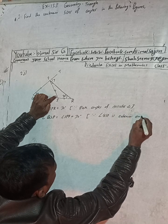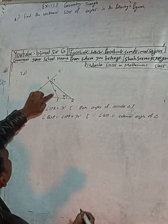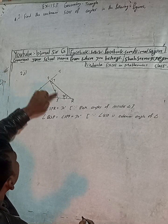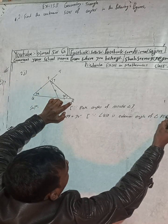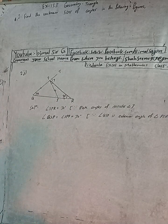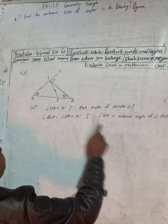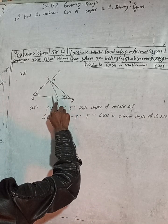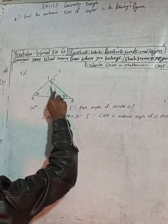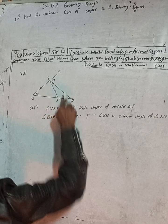The exterior angle of triangle PSR is angle QSP. We know the theorem that the exterior angle of a triangle is equal to the sum of the two opposite interior angles. So this angle QSP, the exterior angle, is equal to the sum of the two opposite interior angles — this and this are the opposite interior angles, and their sum is added together.